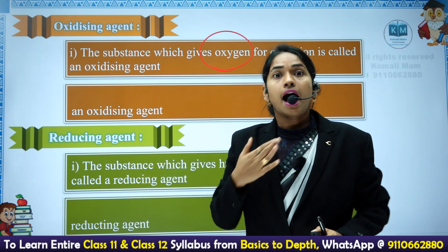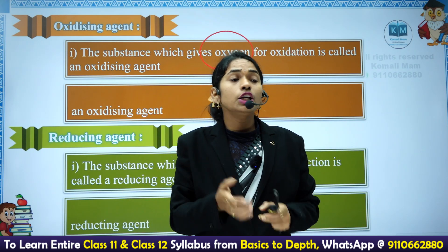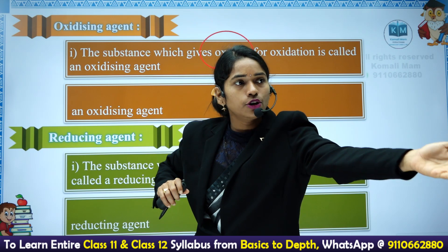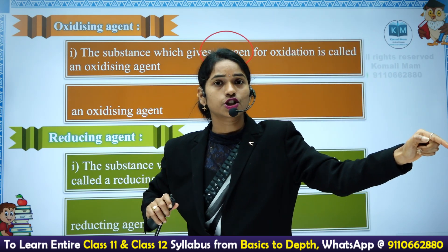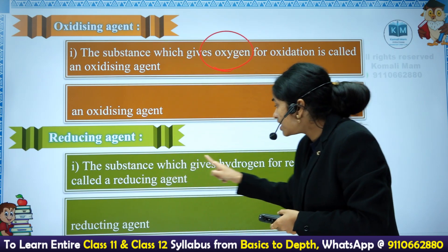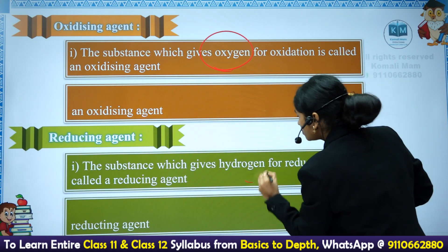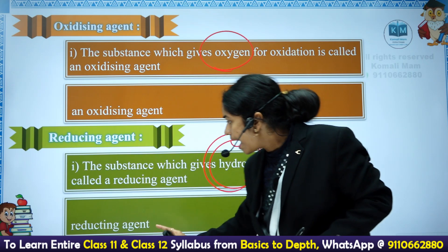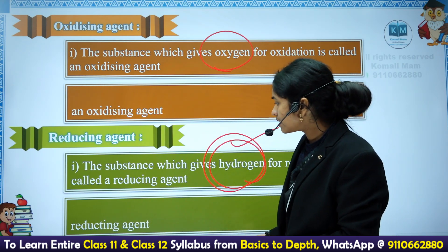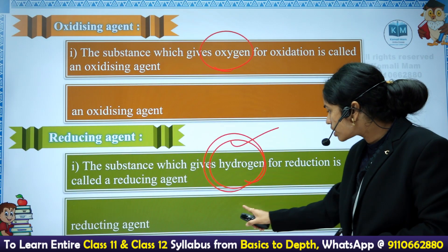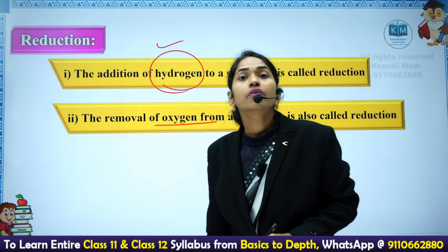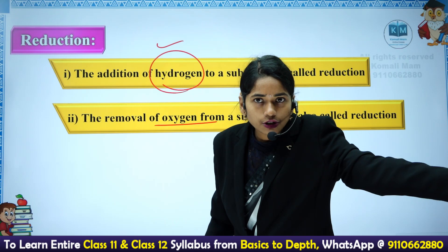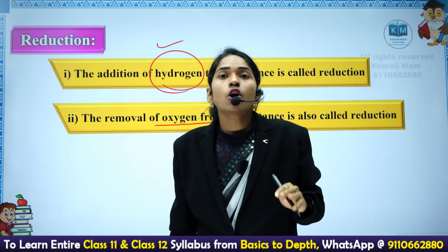Reverse — reducing agent. I am the one who is reducing you. How am I reducing you? Reduction means addition of hydrogens, so I am giving you hydrogens so that you are undergoing reduction. The substance which gives hydrogens — that is the reason reduction is happening, and that's why we call it the reducing agent. Either the substance which gives hydrogens or removes oxygen, we call it the reducing agent.